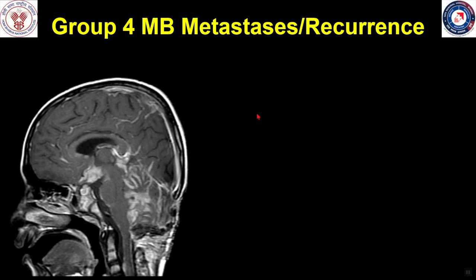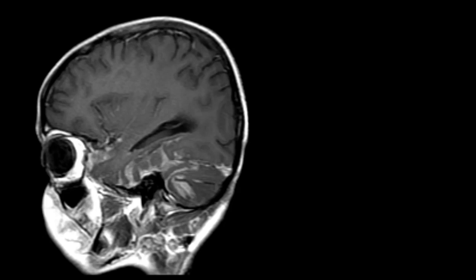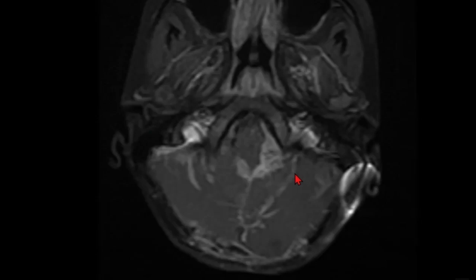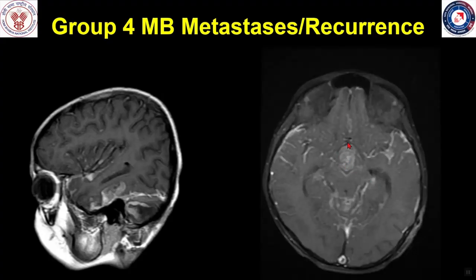This was a child treated for Group 4 medulloblastoma who presented with cerebellar signs — positive Romberg test and inability to perform tandem walking. On post-contrast studies, there is extensive leptomeningeal enhancement involving the cerebellar fissures, the fourth ventricle, pineal region, and the surface of the brain stem. A deposit is also seen in the anterior part of the third ventricle or suprasellar system — a characteristic appearance of Group 4 medulloblastoma metastasis. Leptomeningeal enhancement is also identified in the temporal sulci and extending along the surface of the brain stem.